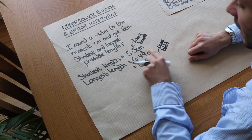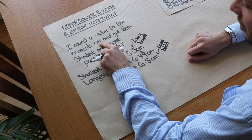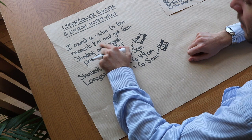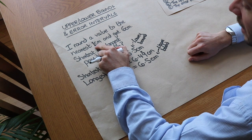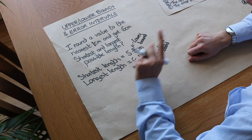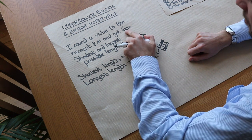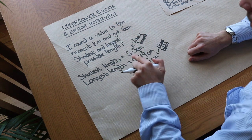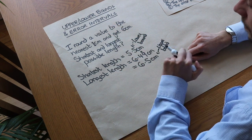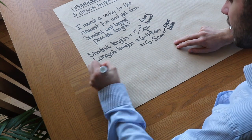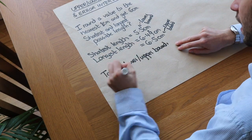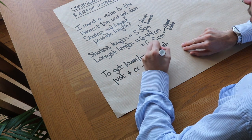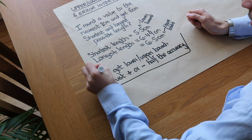The quick way to get the bounds is to halve the accuracy. The accuracy here is to the nearest one centimetre, so half that is 0.5 centimetres. We just add and subtract that from 6: 6 plus 0.5 is 6.5, and 6 minus 0.5 is 5.5. So to get the lower and upper bound, just add or subtract half the accuracy — and that's super important.